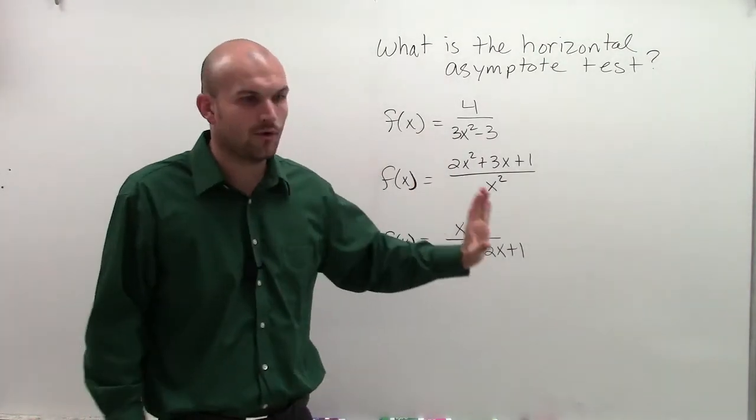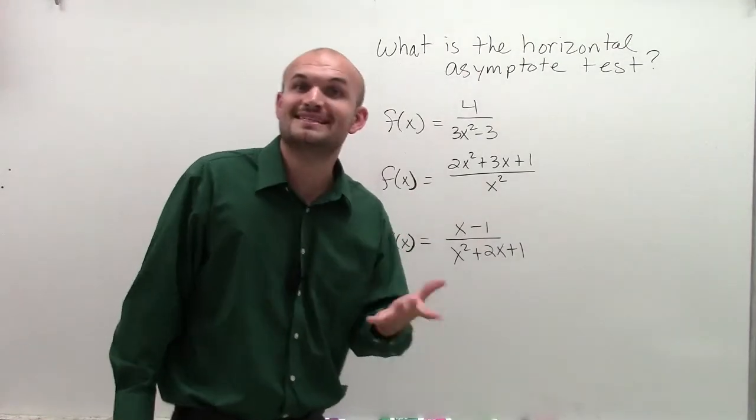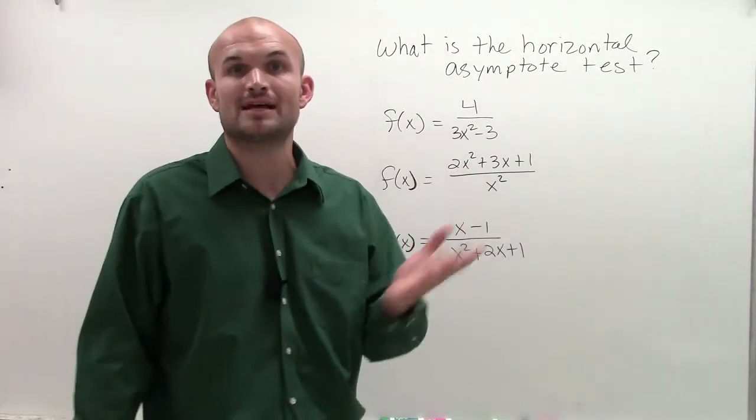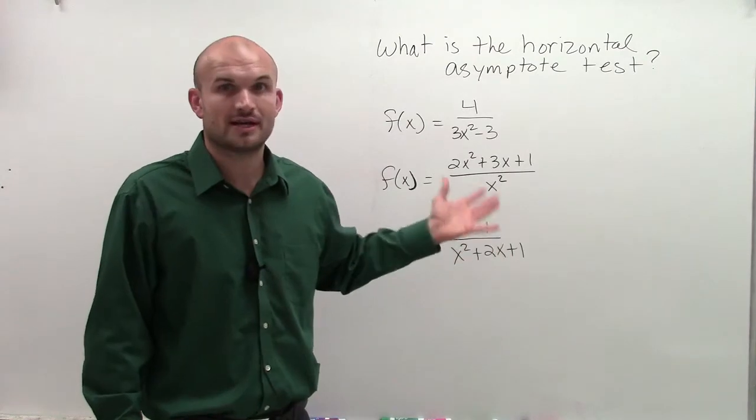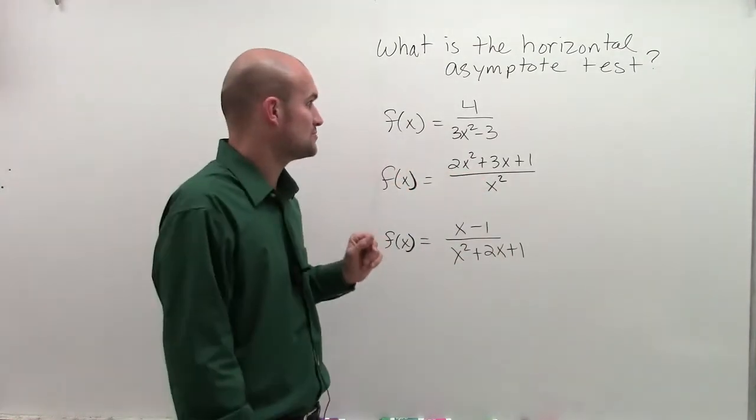However, to find the horizontal asymptote, there's certain conditions that we use to determine if a graph or if a function, a rational function, has a horizontal asymptote or not.